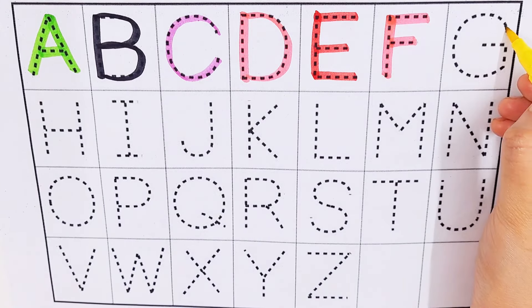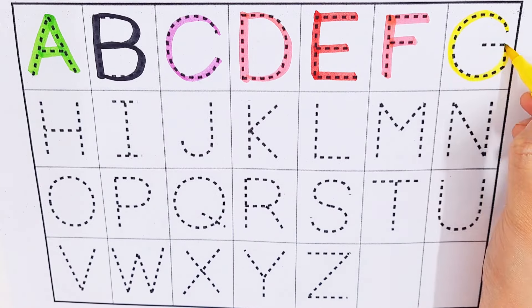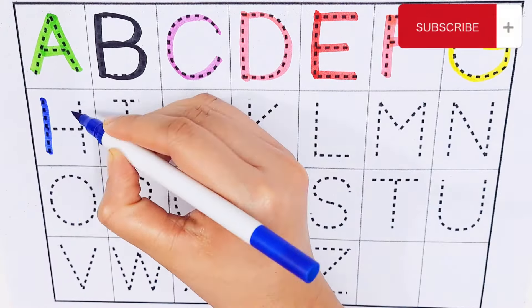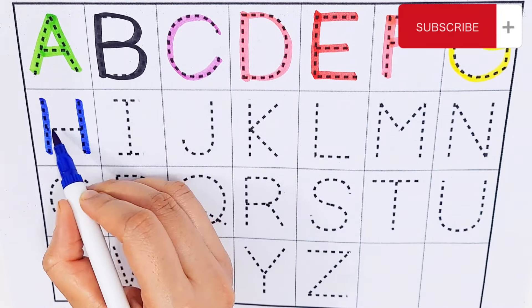Yellow color. G, G for glass. Dark blue color. H, H for house.